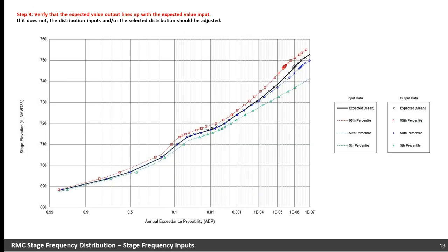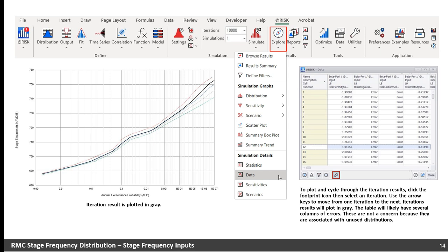After running the analysis, click on the Stage Frequency Plot tab to graphically view the results. The dashed lines on the plot are for the input data, and the data markers are for the output data. We want to verify that the expected value output lines up with the expected value input. Sometimes the distribution outputs will not line up well with the expected value at the upper stages — this is usually because of how the curves were extrapolated to force each curve to reach the same maximum stage. If the expected value output does not line up with the input, the extrapolation or assigned distribution should be adjusted through trial and error. After running the simulation, you can use explore data and click the footprint to step through each iteration. Please note that the table may have several columns of errors, but they are from unused distributions, so the errors are not a problem.